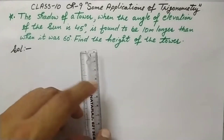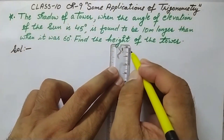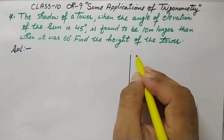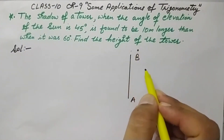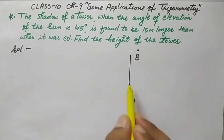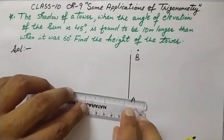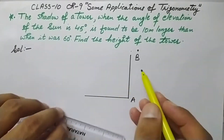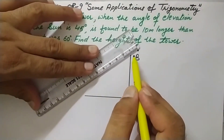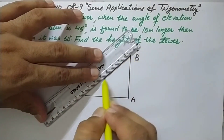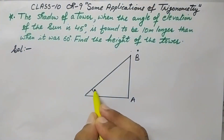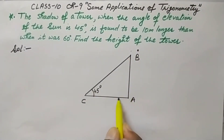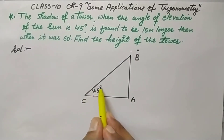First of all, we draw the tower — AB is a tower. Suppose the sun is here, then the shadow of tower AB will be like this. This is the shadow of the tower, and this is the angle of elevation. This angle is given in the first case as 45 degrees. AC is the shadow in the first case, when the angle of elevation is 45 degrees.